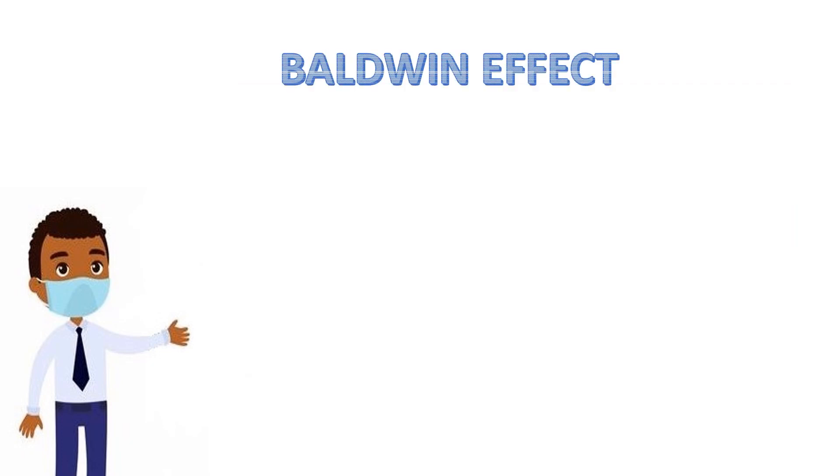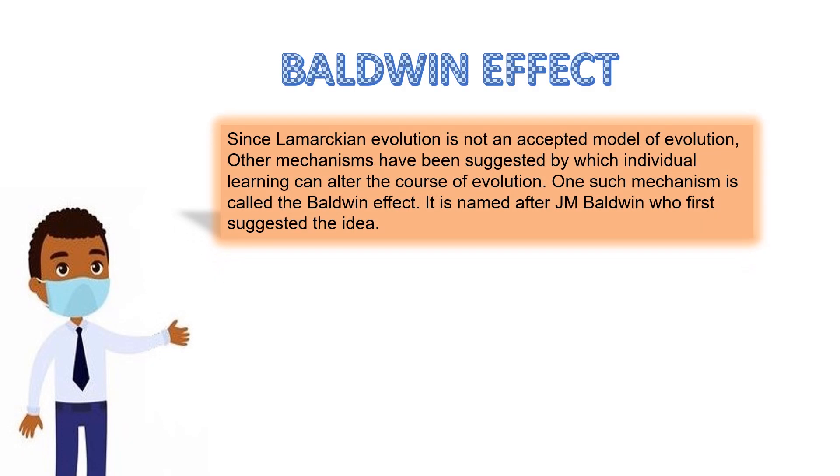Now let's discuss Baldwin effect. Since Lamarckian evolution is not an accepted model of evolution, other mechanisms have been suggested by which individual learning can alter the course of evolution. One such mechanism is called the Baldwin effect, named after J.M. Baldwin who first suggested the idea.